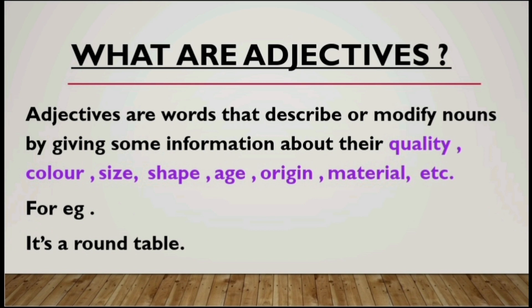They give information about the quality — if it is good, if it is bad, if it is decent. It gives information about the colour: is it black, is it white, is it purple? It gives us information about the size of a noun — if it is small or if it is big. It also gives us information about the shape: is it circular, is it triangular, is it oval?